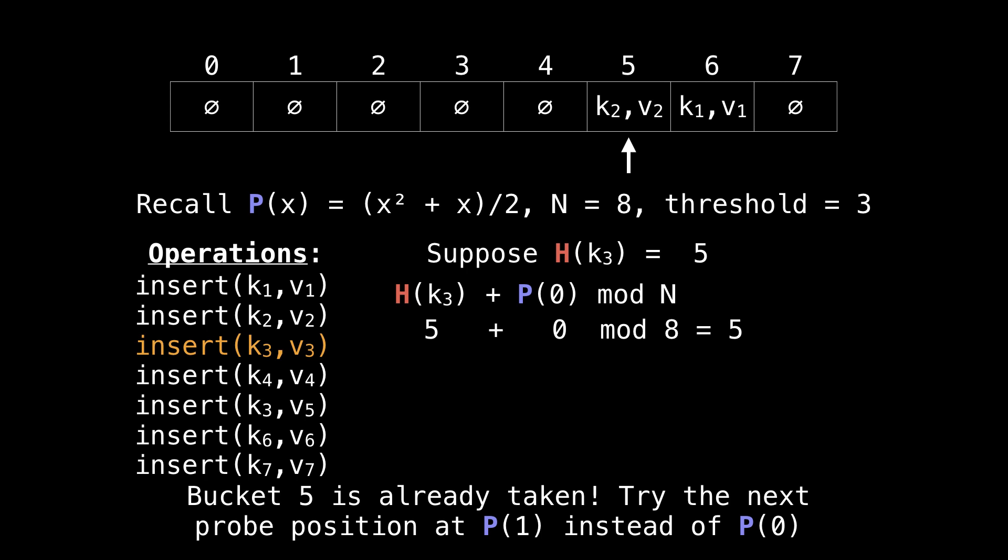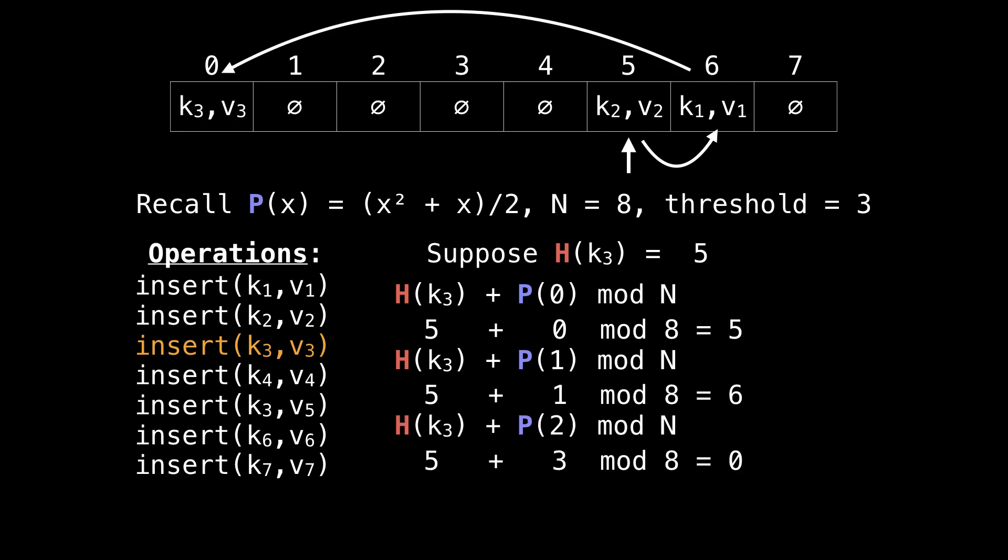We're going to try probing at offset 1, which brings us to 6. So we probe again, and that brings us to index 0, which is free, so we're going to insert k3 and v3 key value pairs there.